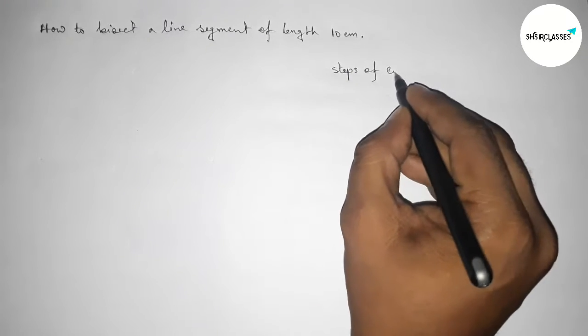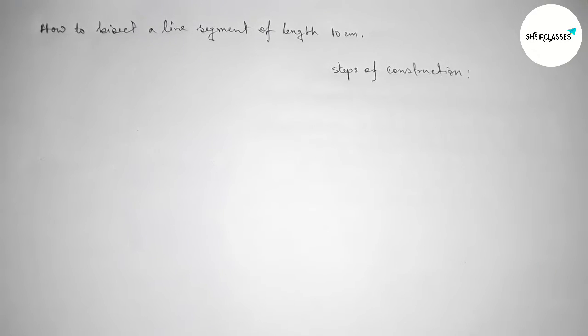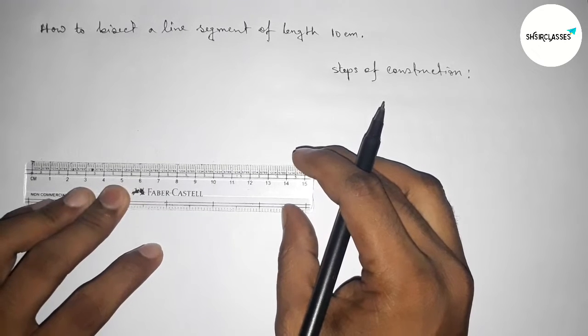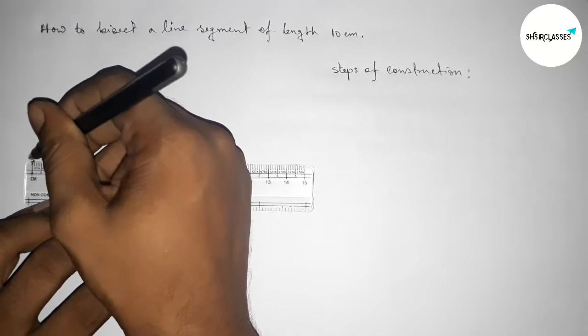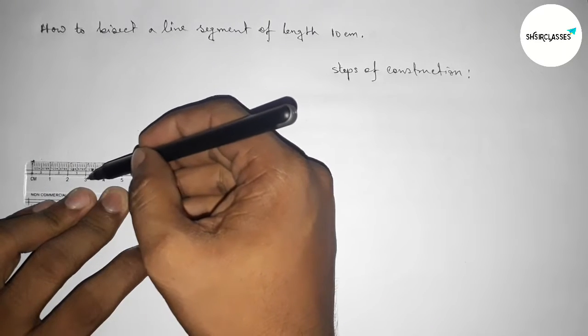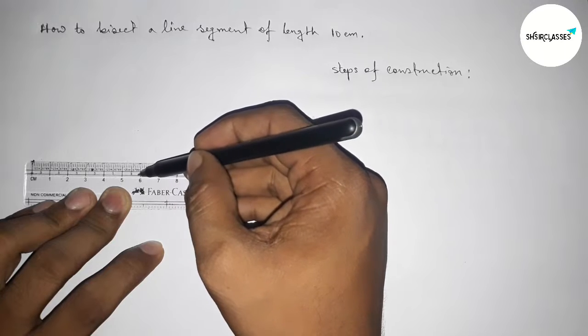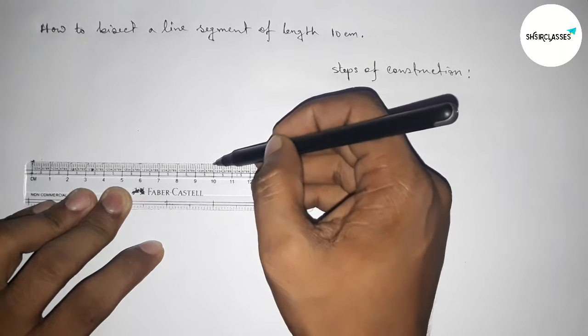Okay, so now first we have to draw here a line of length 10 centimeter. This is starting 0 and this is 1, 2, 3, 4, 5, 6, 7, 8, 9, 10. So this is 10 centimeter line segment.